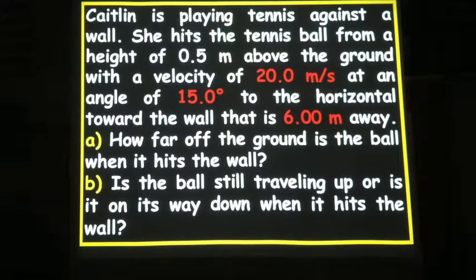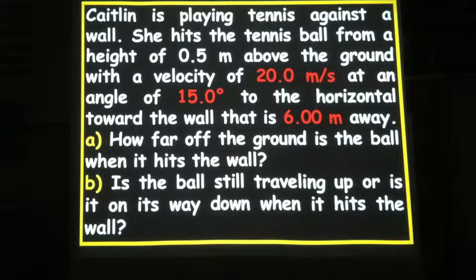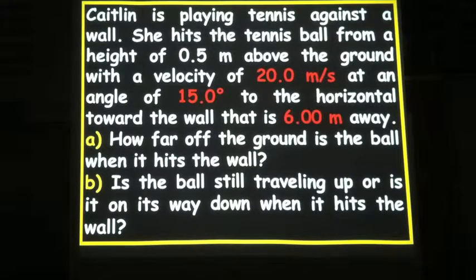First problem we're going to do is about a tennis player. Caitlin is playing tennis against a wall. She hits the tennis ball from a height of 0.5 meters above the ground with a velocity of 20 meters per second at an angle of 15 degrees to the horizontal towards the wall that is 6 meters away. Two questions: How far off the ground is the ball when it hits the wall? And is the ball still traveling up or is it on its way down when it hits the wall?